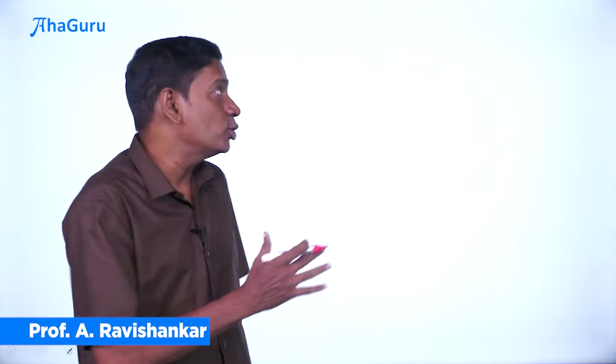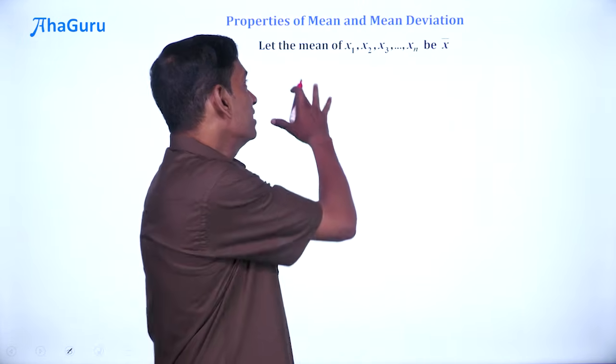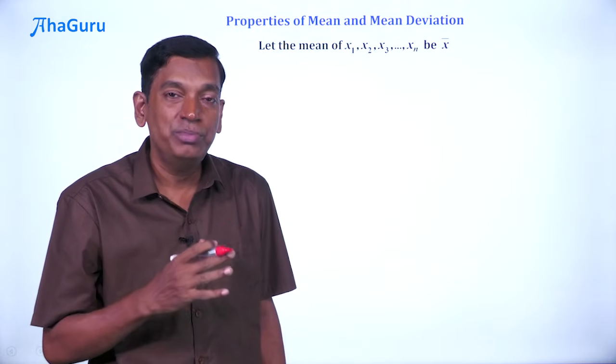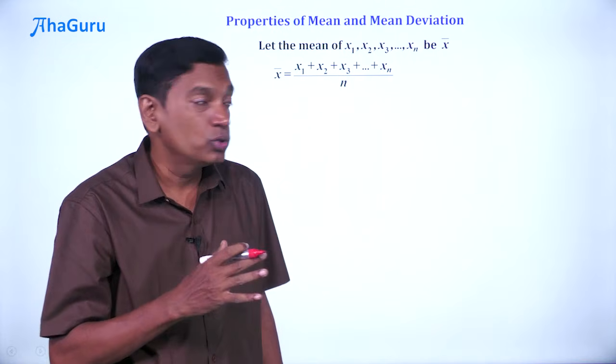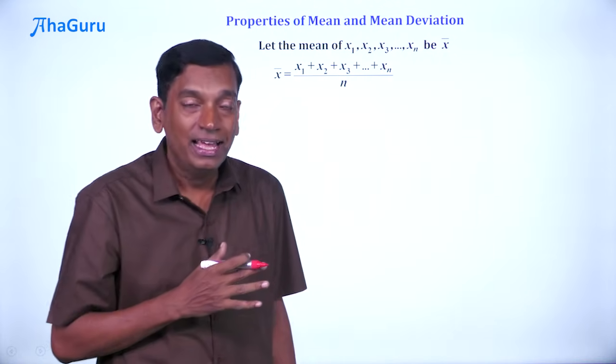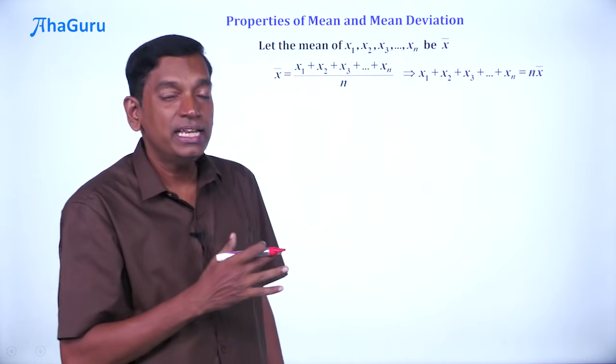We are going to learn about some simple properties related to mean and mean deviation. Let the mean of x₁, x₂, ..., xₙ be x̄. Then we know that x̄ = (x₁ + x₂ + ... + xₙ)/n, and therefore x₁ + x₂ + ... + xₙ = n × x̄.